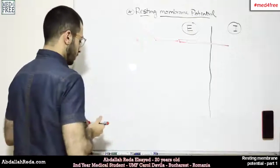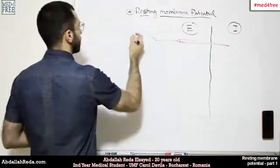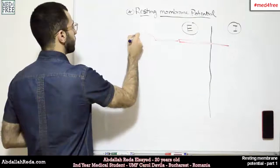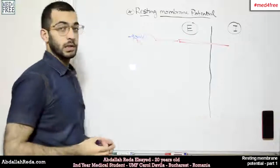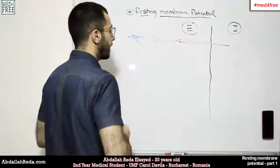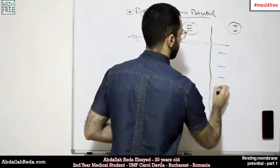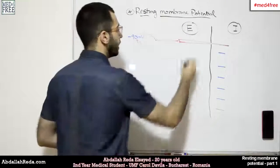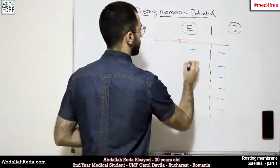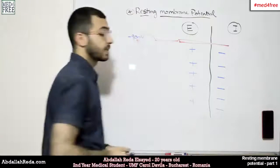We would see that the value is around minus 90 millivolts, and we would notice that there is an accumulation of negative charges on the inside of the cell and positive charges on the outside of the cell.